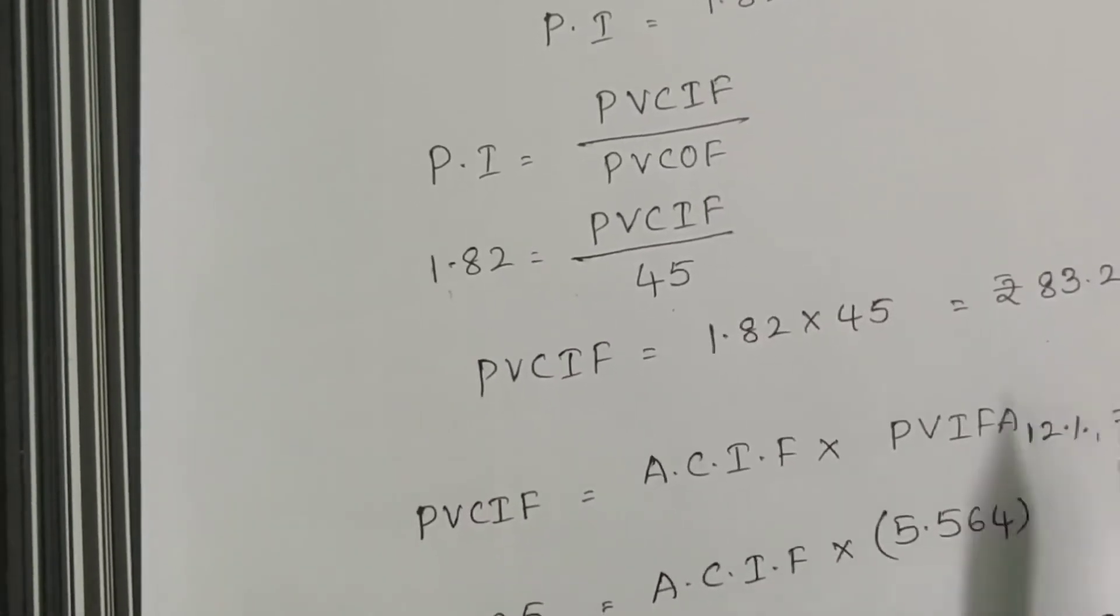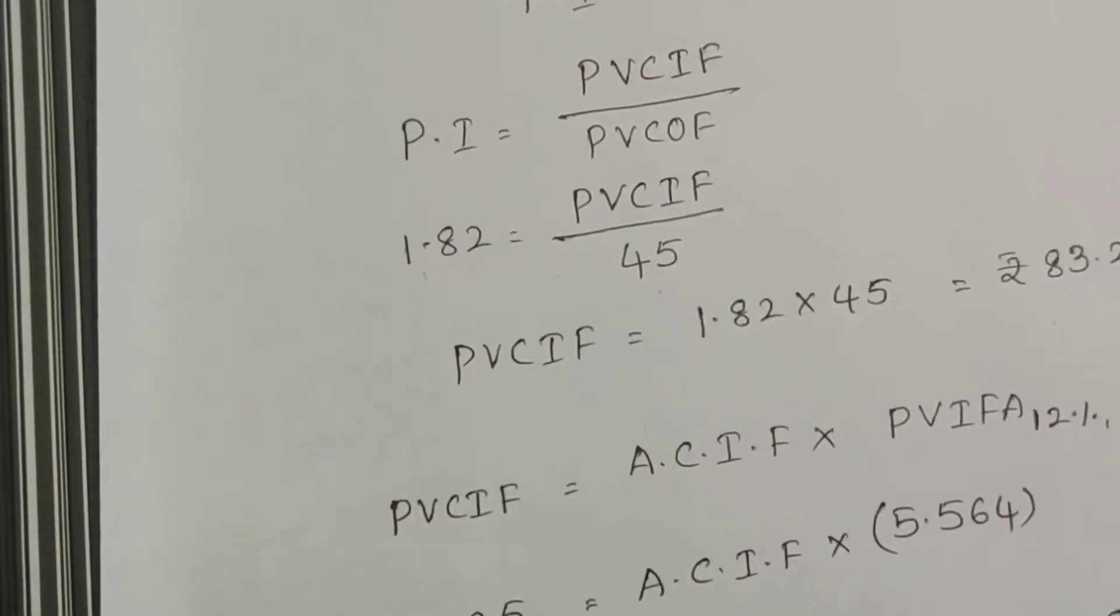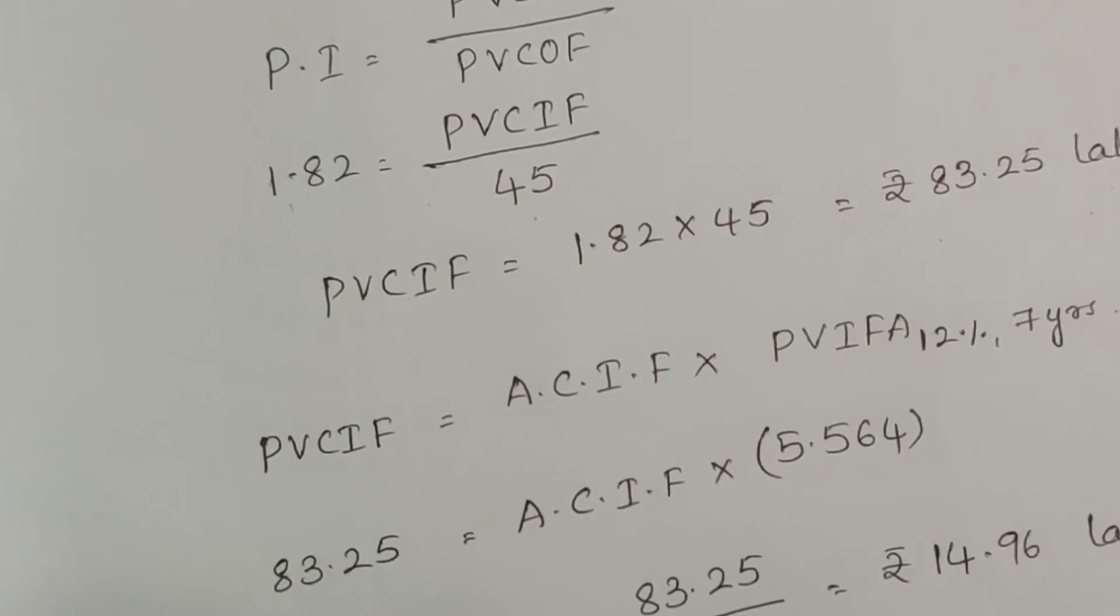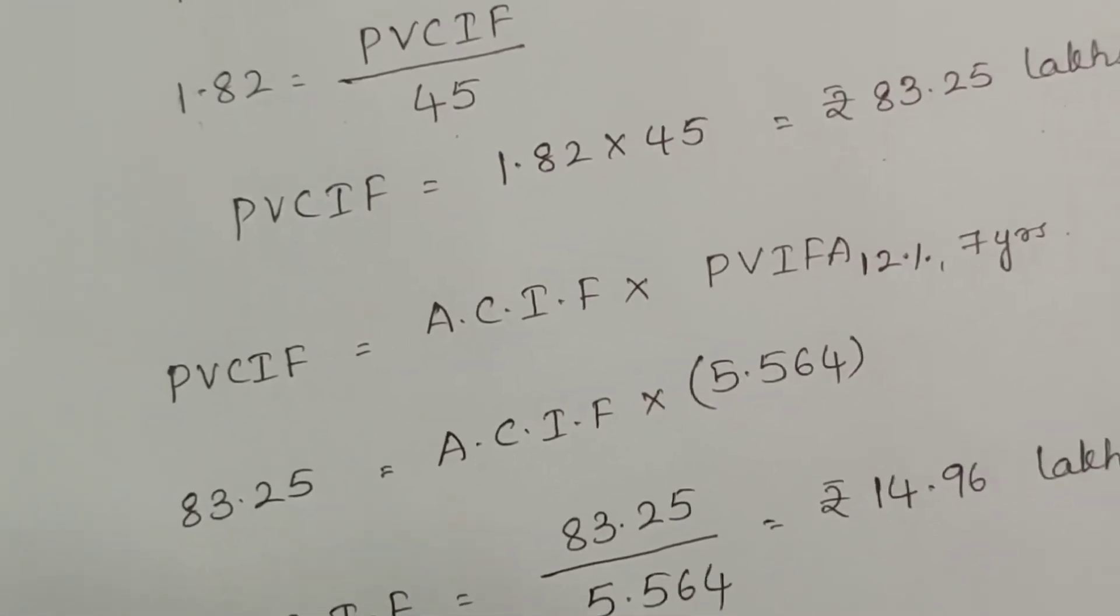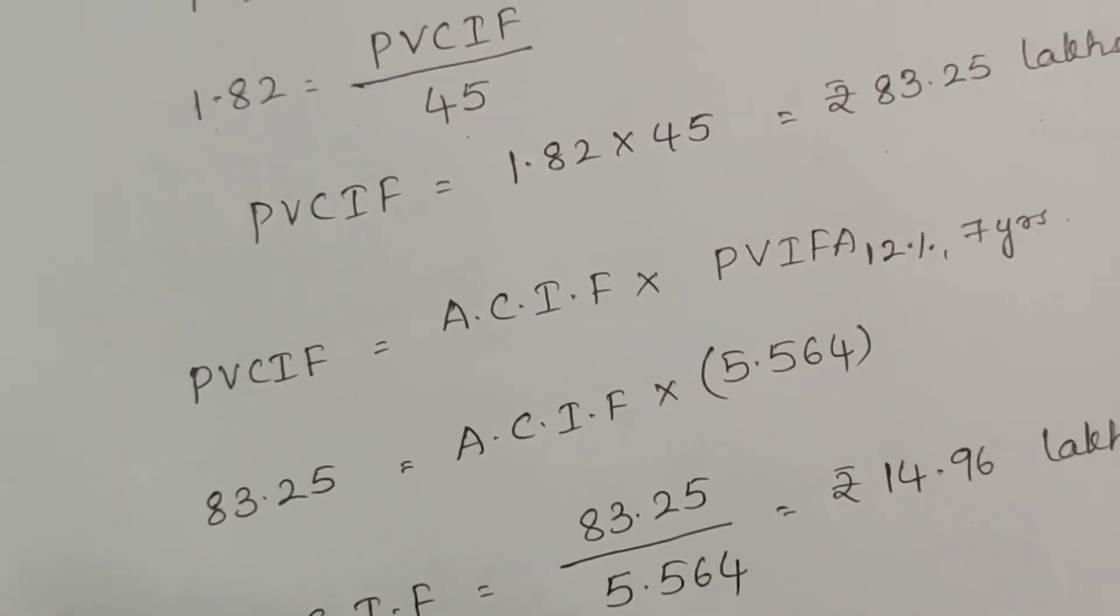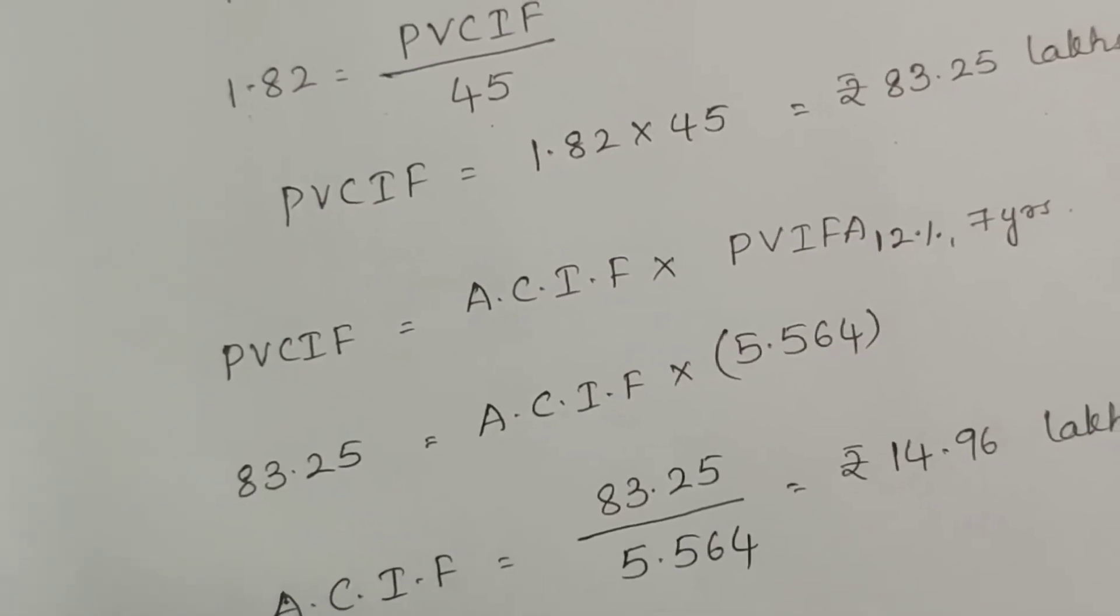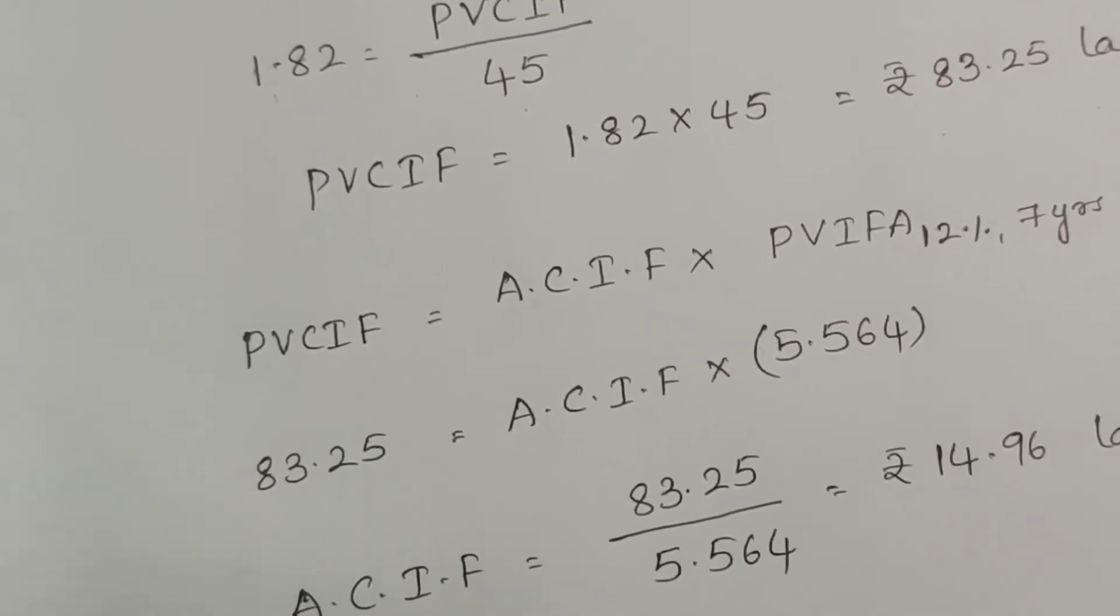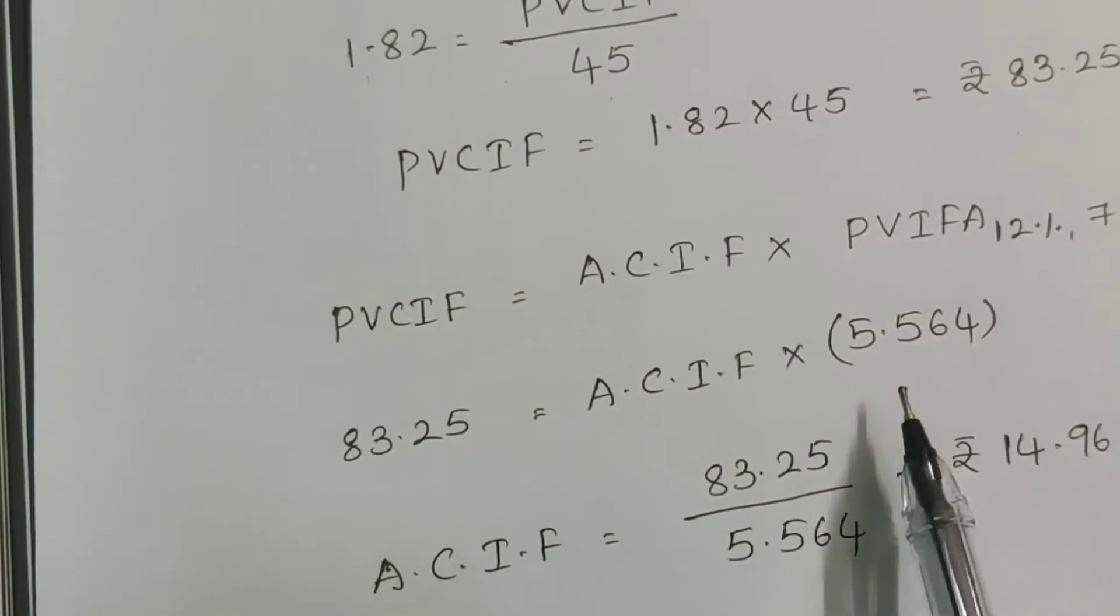This 83.25 lakhs is nothing but present value of cash inflow. Going back to time value of money concepts, present value of cash inflows equals annual cash inflow multiplied with present value interest factor for annuity. K is 12 percent, N equals 7 years. Going with the table values, 12 percent 7 years, the table value is 5.564.